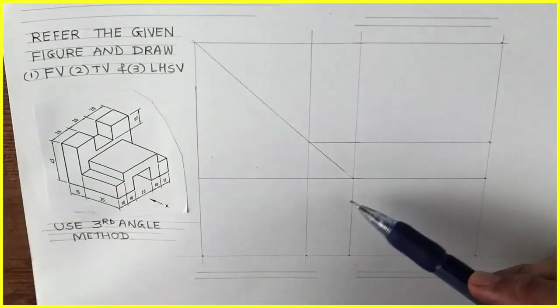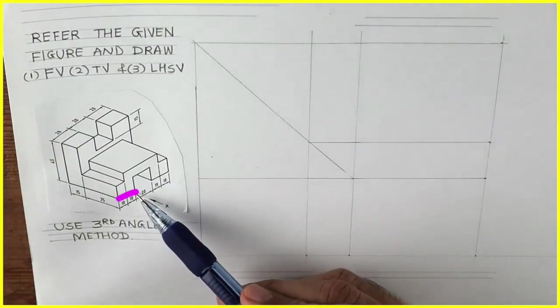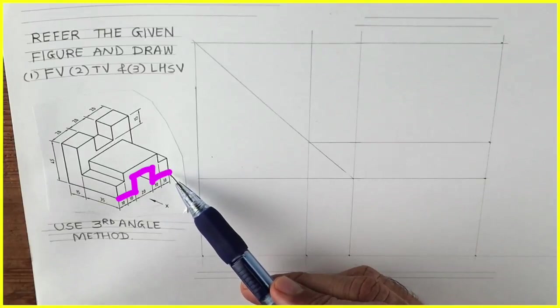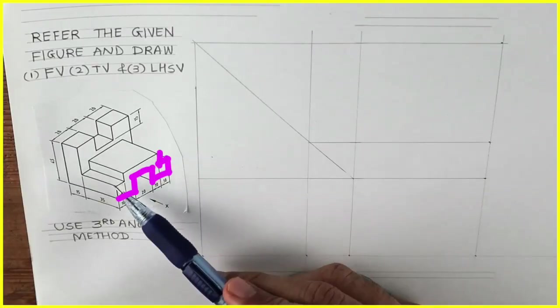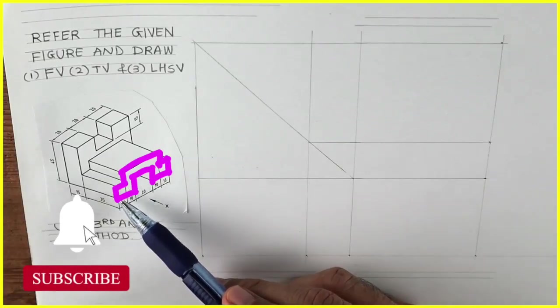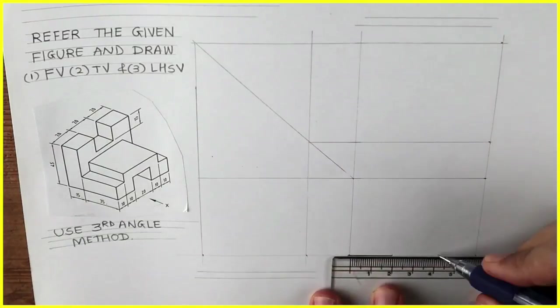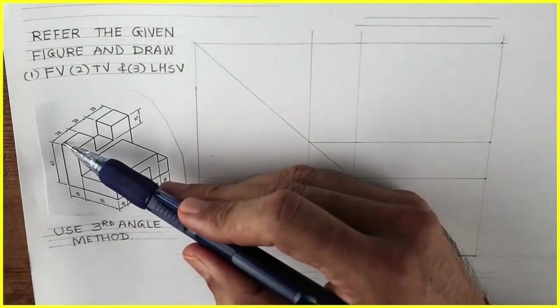See this: 20 height, 15, then again 20. We will draw this shape. We'll mark 20, 20 on both the sides. This is 15, this is also 15, so we'll mark 15.